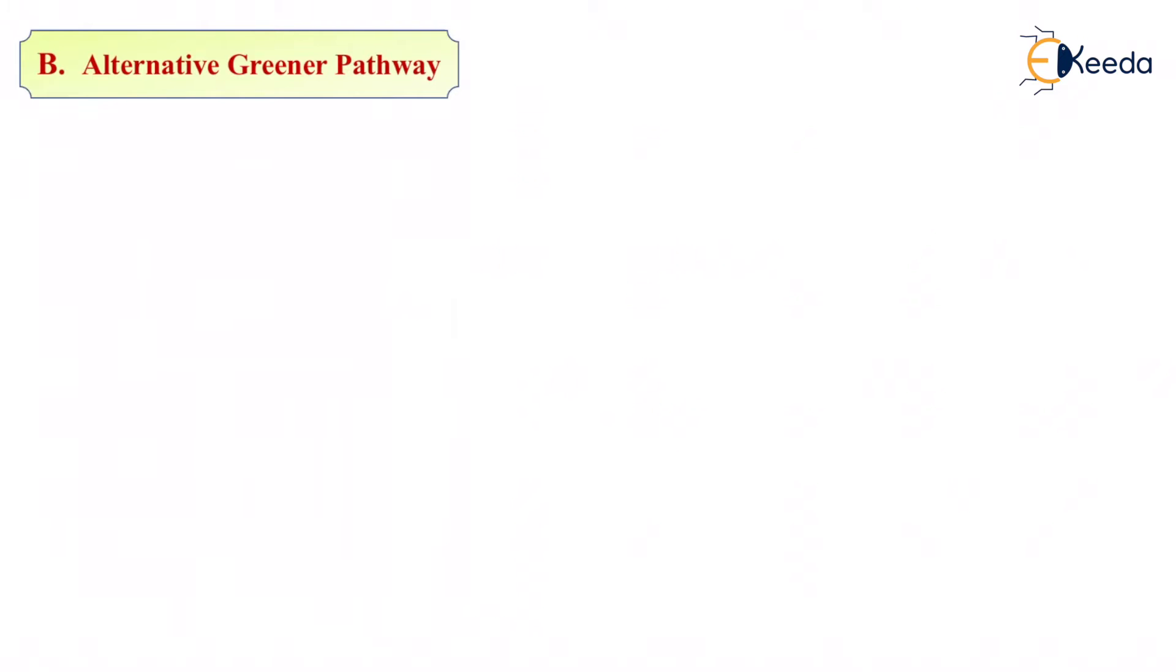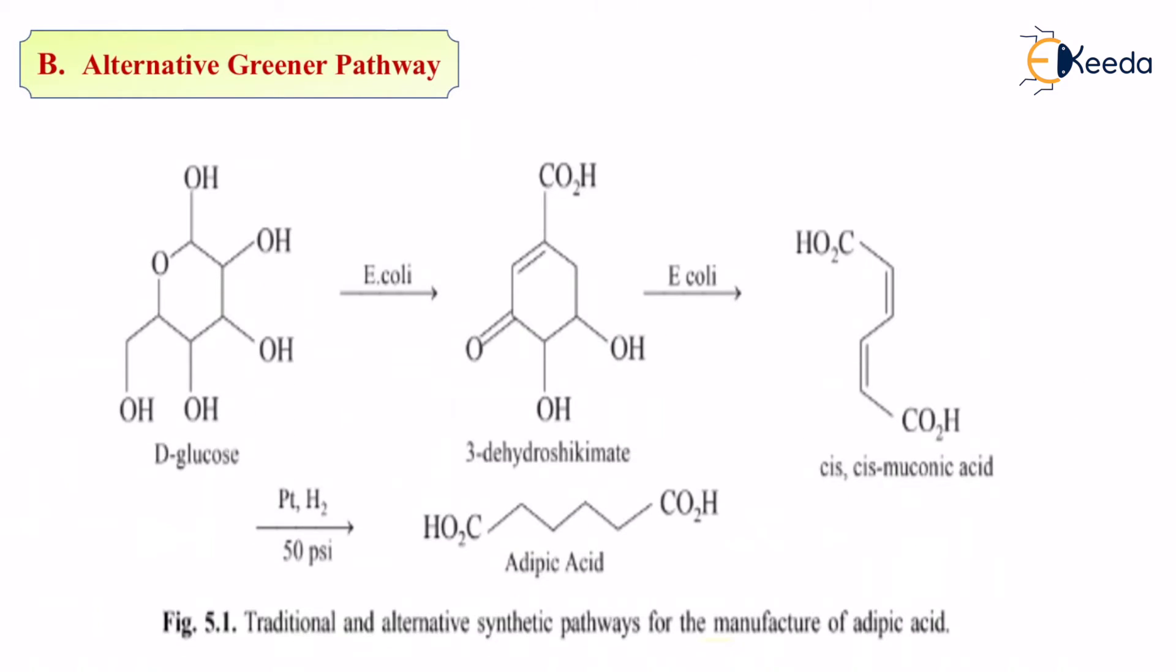Alternative greener pathway. The alternative greener pathway is when we replaced the normal conventional benzene feedstock with glucose feedstock. Glucose feedstock is having a raw material of glucose. Let us see the reaction. You have D-glucose. What do you mean by D-glucose?